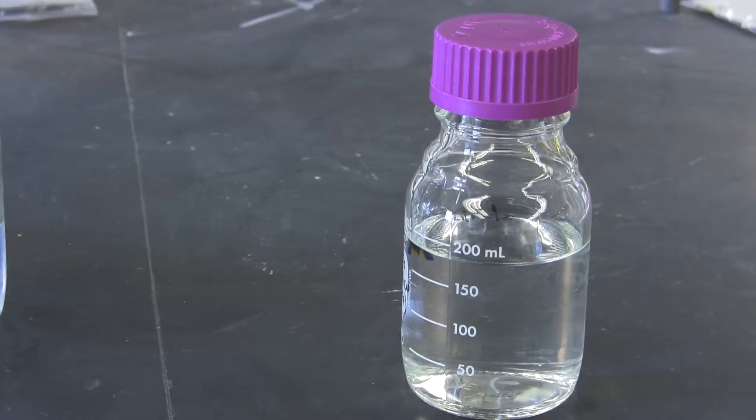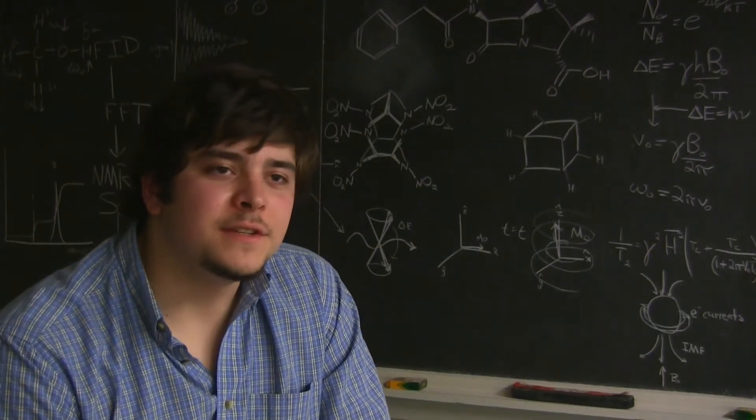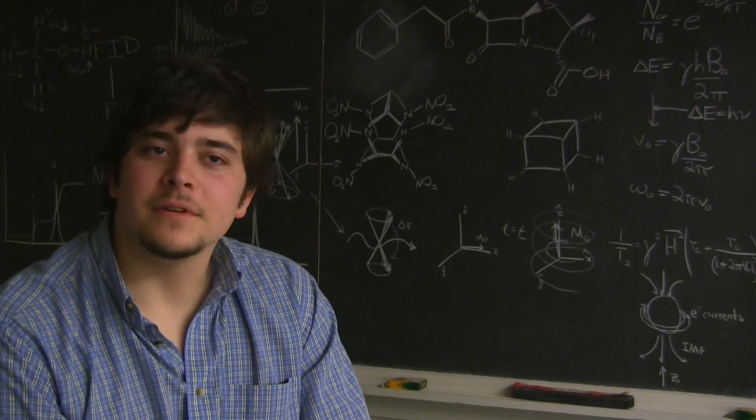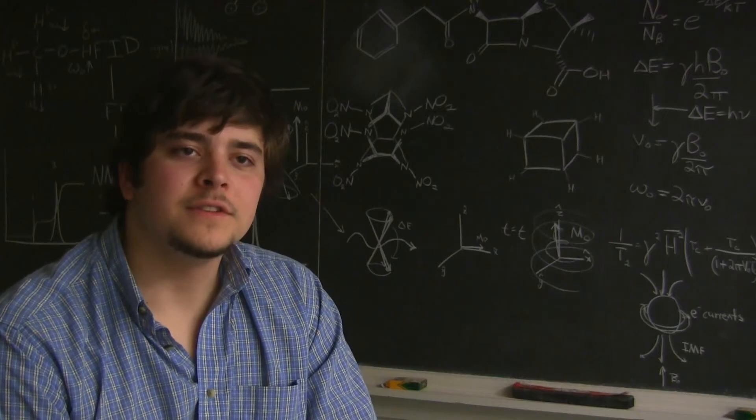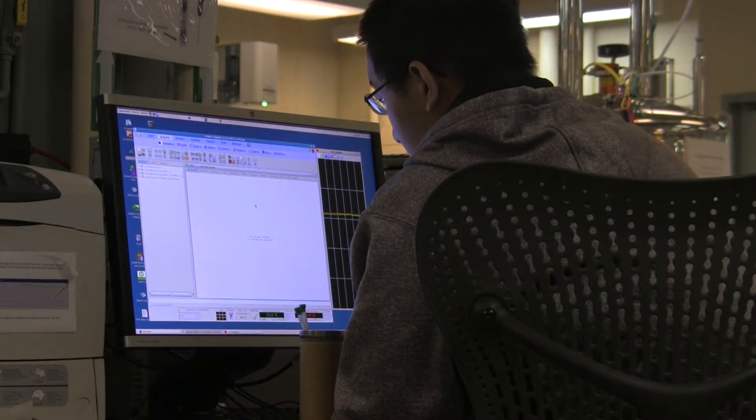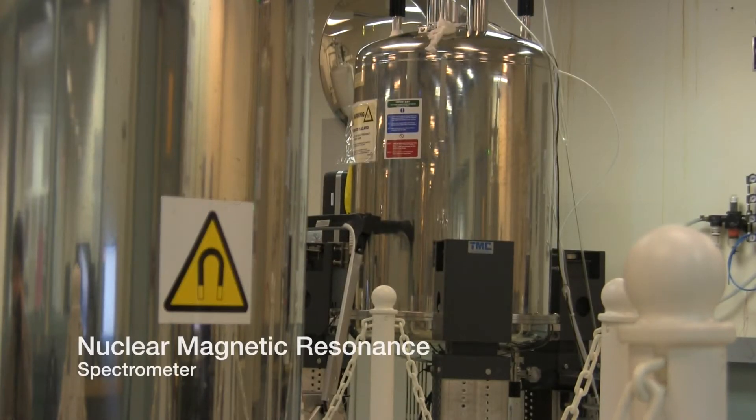You can't simply look at the flask and say that you made ethanol, and even if you could see, smell, or somehow indicate that you made your compound, you still couldn't say how pure it is. The only way to truly identify your compound is to use computational power.